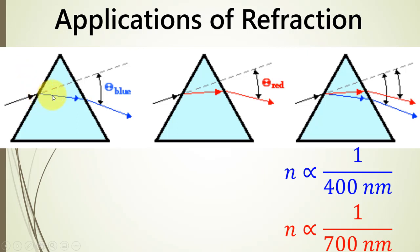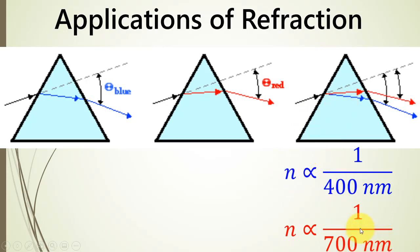Blue light moves faster in this medium compared to red light, which is slightly slower. So we have blue color faster than red, and this causes all the intermediate colors. If we consider the blue color, its starting wavelength is 400 nanometers, and it will experience a different refractive index of the prism. The red color will experience a different refractive index, and due to that they travel at different speeds.